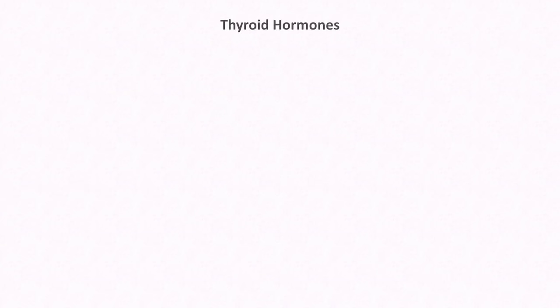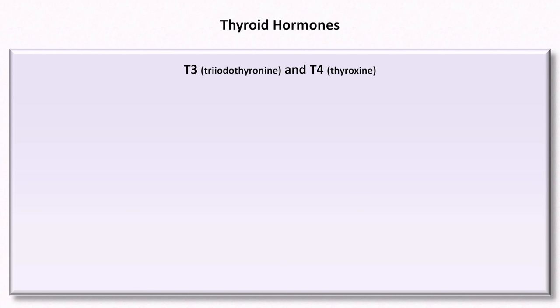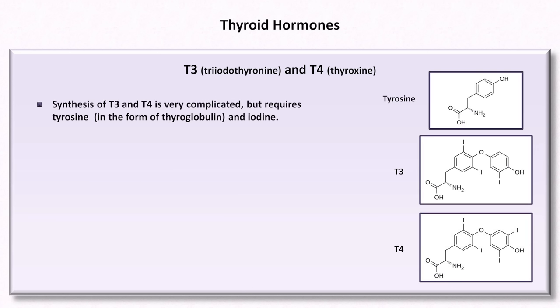Now let me talk about the true thyroid hormones — those hormones which are actually synthesized and released by the thyroid gland. They are almost universally called T3 and T4, though formally are triiodothyronine and thyroxine. The biosynthesis of T3 and T4 is very complicated, but requires tyrosine and iodine. The tyrosine used for thyroid hormone is actually stored as a glycoprotein called thyroglobulin, each molecule of which has about 70 molecules of tyrosine, and the thyroid hormone is synthesized while still attached to the larger thyroglobulin, and remains so until it is secreted.